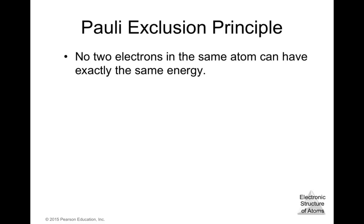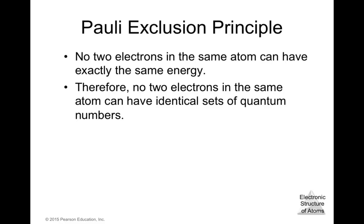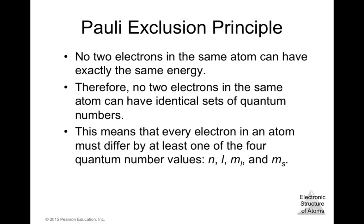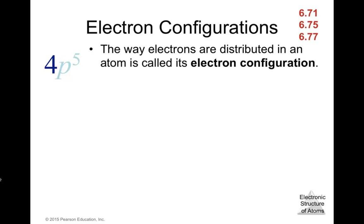The Pauli exclusion principle states that no two electrons in the same atom can have identical sets of quantum numbers. This means every electron must differ in at least one of the four quantum numbers: n, l, m_l, and m_s.